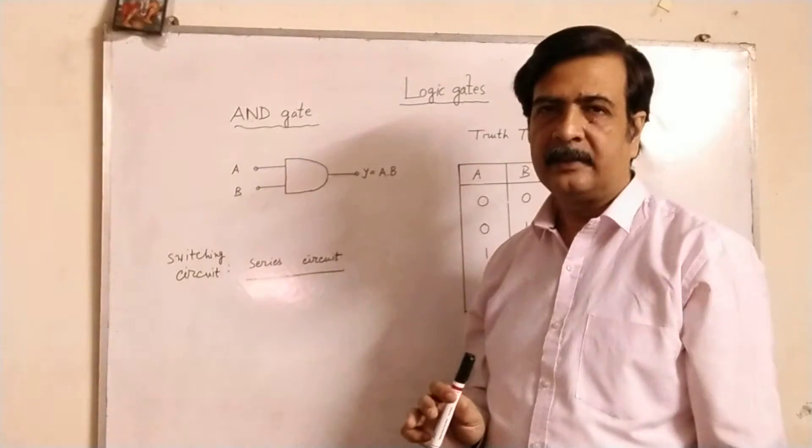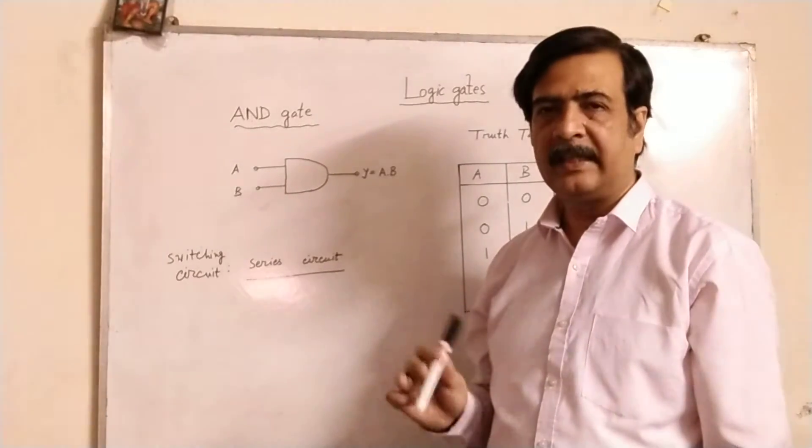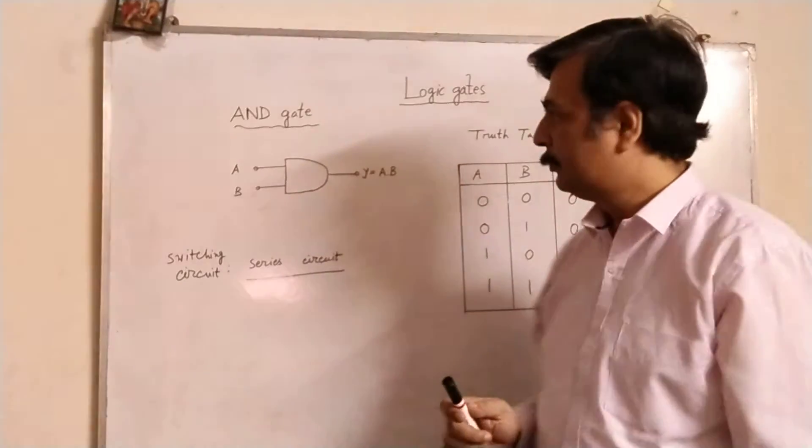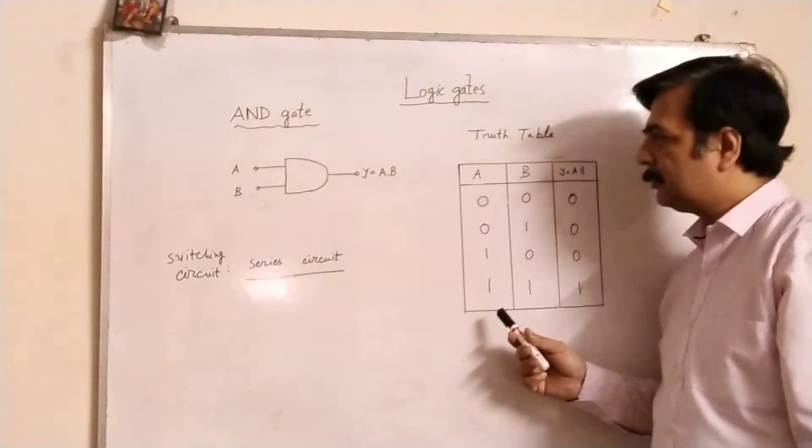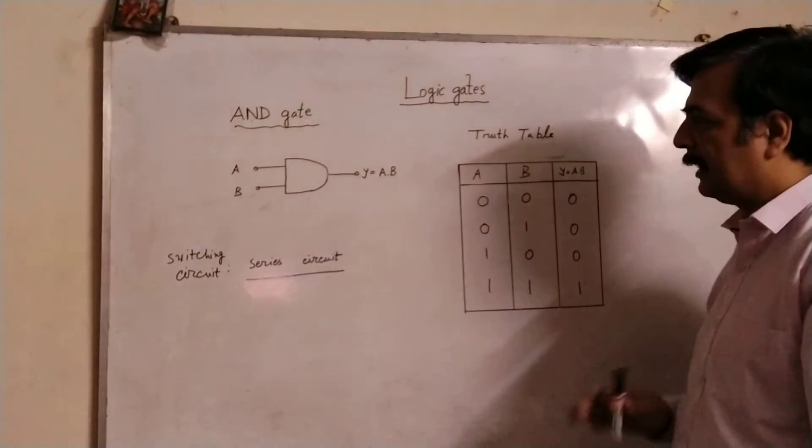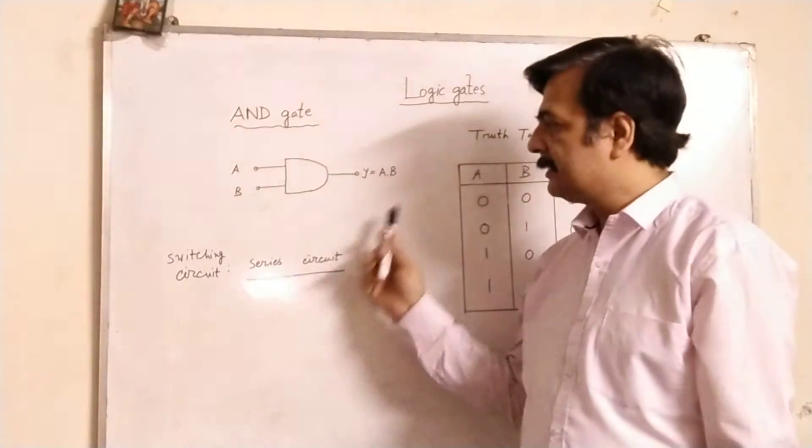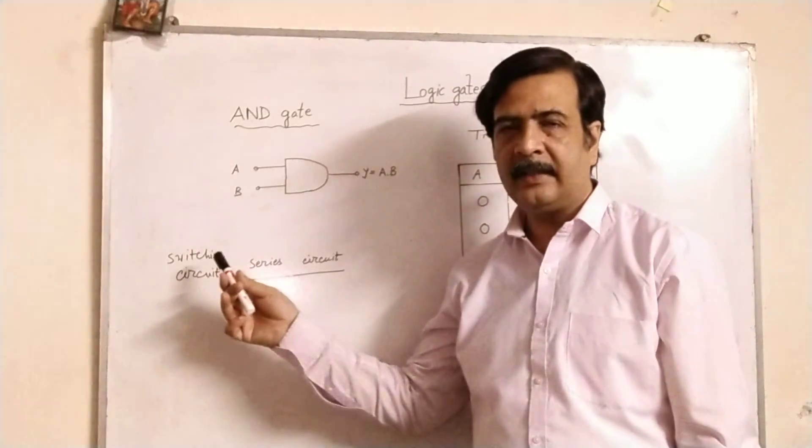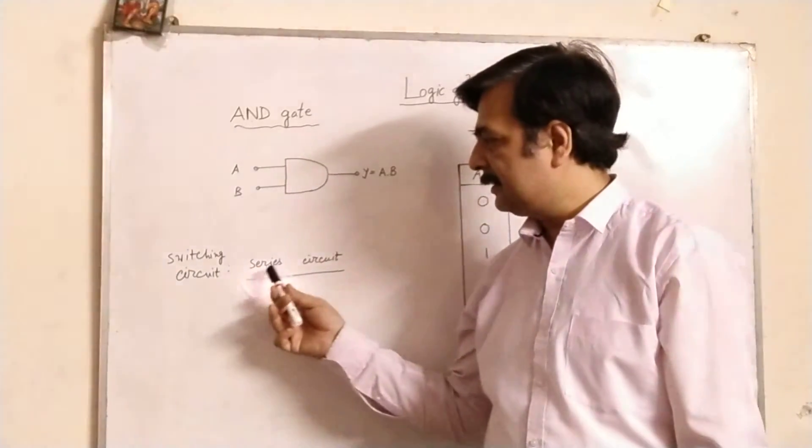But the operation here is on the basis of binary operation, not decimal. So if I draw the truth table, and one more thing, it is like a series circuit. If we consider the equivalent switching circuit, it is a series circuit.